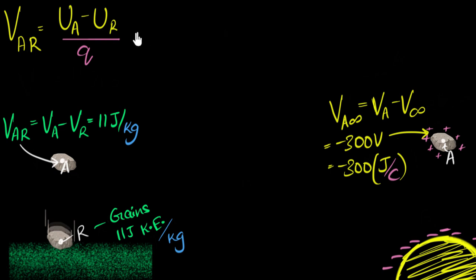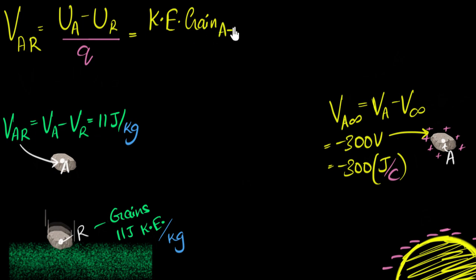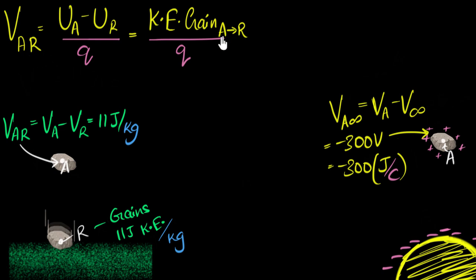So what I can say now is this number should equal how much kinetic energy was gained as it moved from A to the reference point, per charge. So before we continue, let's hold over here and see if we can use this definition to realize when the potential will be positive or negative. When you go from your point to the reference point, if you gain kinetic energy, it'll be positive. And that's why we got a positive number over here — as it went from here to here, it gained kinetic energy.